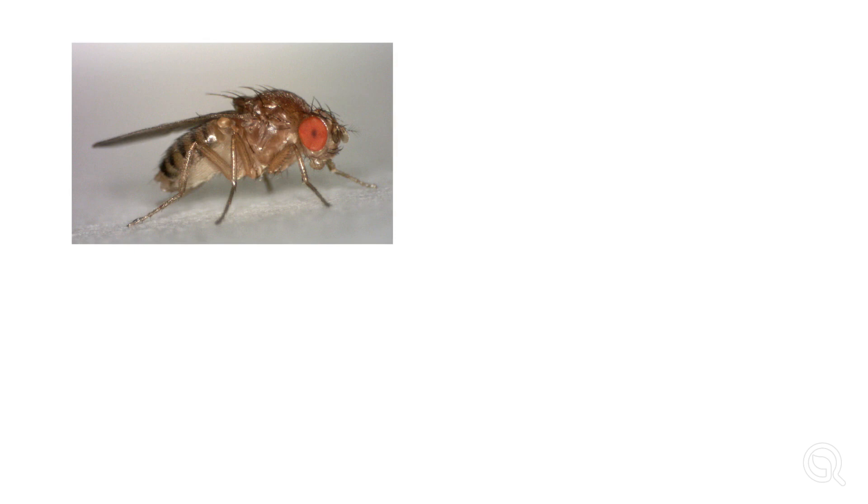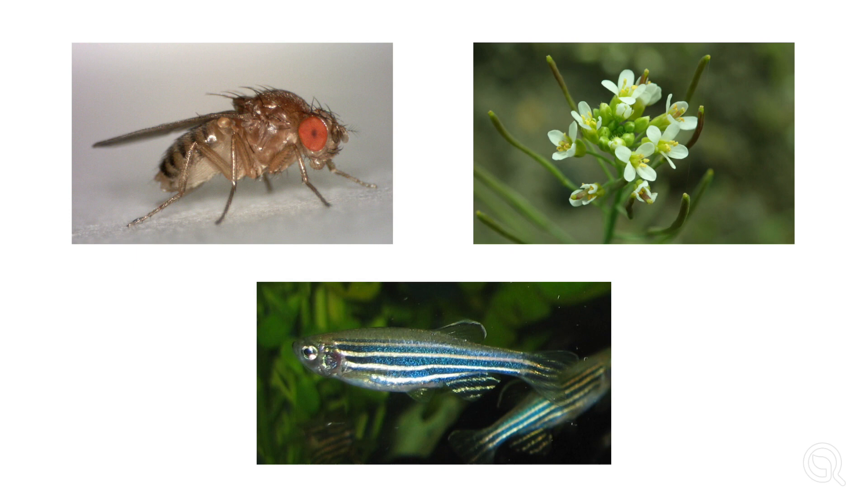If you're studying biology, there's a big chance you're going to use model organisms when you go to work in a lab or do research. Whenever we have a hypothesis in biology, most of the time we need to test it in a living organism — that could be fruit flies, fish, or plants. Any living organism can serve as a model organism. And while these animals or plants are complex, they're a little bit more simple than human biology.